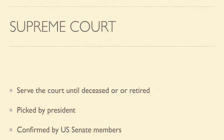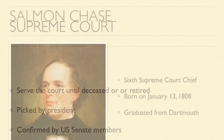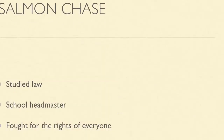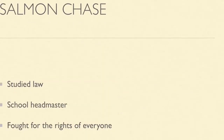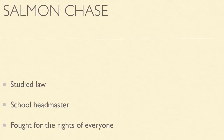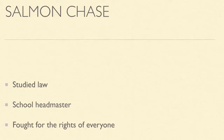In 1864, Salmon Chase was the sixth Supreme Court Chief Justice. He was born on January 13, 1808. He later graduated from Dartmouth studying in law and was a school headmaster in Washington, D.C. He sought out to fight for the rights of everyone, as he treated everyone equally, due to his religion of Episcopalian.